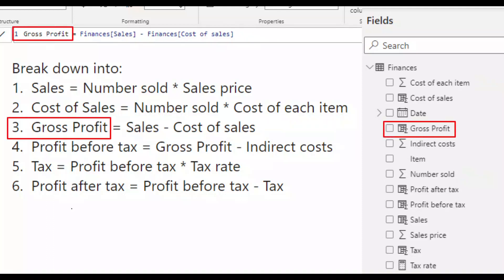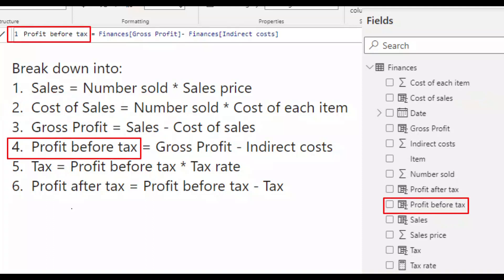For gross profit, I use the new sales column from step one and then the cost of sales column from step two. For profit before tax, again, I use the gross profit column created at step three, then minus the existing indirect cost field, which is part of the original data set.